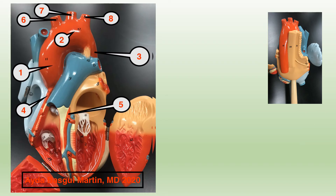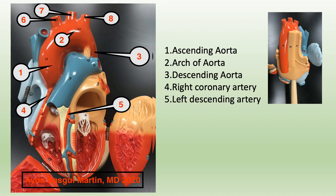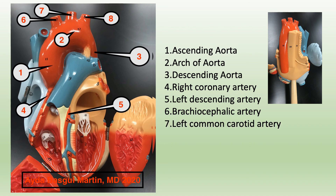Now let's test your knowledge. Number one stands for the ascending aorta. Number two is the arc of aorta. Number three is the descending aorta, or thoracic aorta. Number four is the right coronary artery. Number five is the left anterior descending artery, which is a branch of the left coronary artery. Number six is the brachiocephalic artery, the first branch from the arch of the aorta. Number seven is the left common carotid, and number eight is the left subclavian artery.